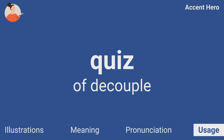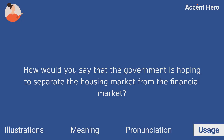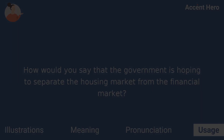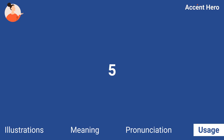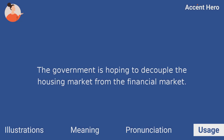Quiz. How would you say that the government is hoping to separate the housing market from the financial market? The government is hoping to decouple the housing market from the financial market.